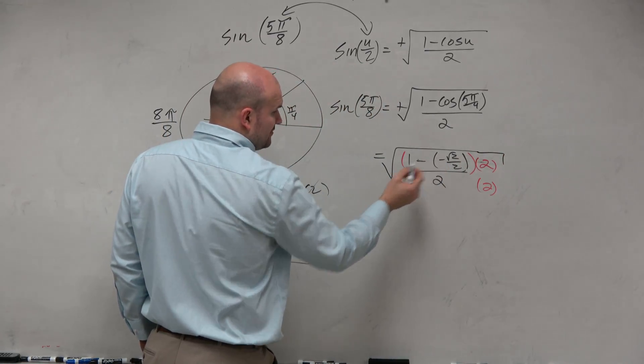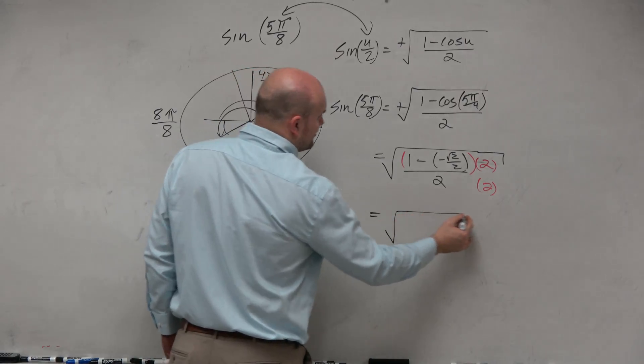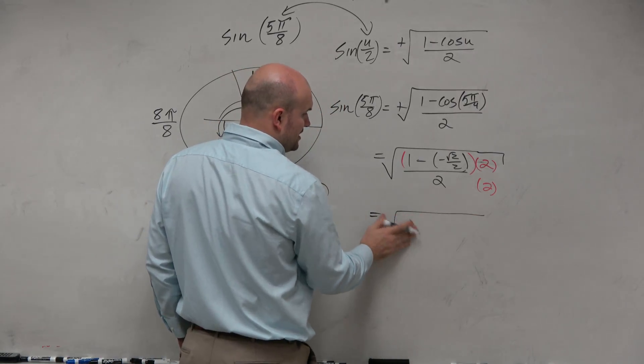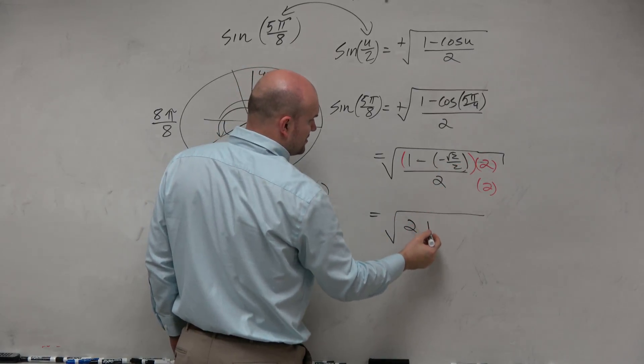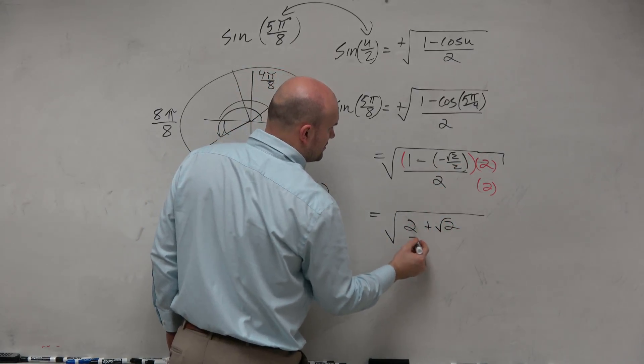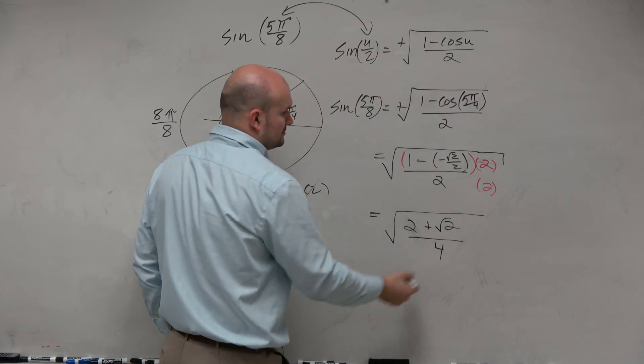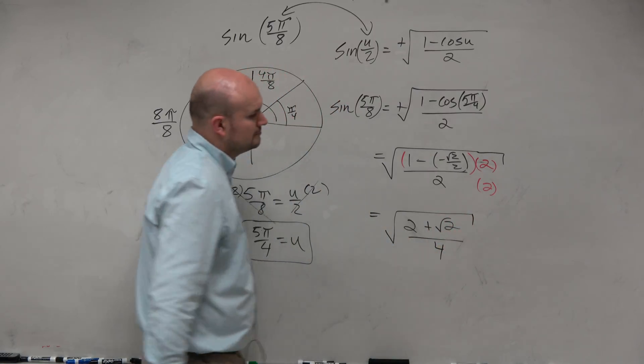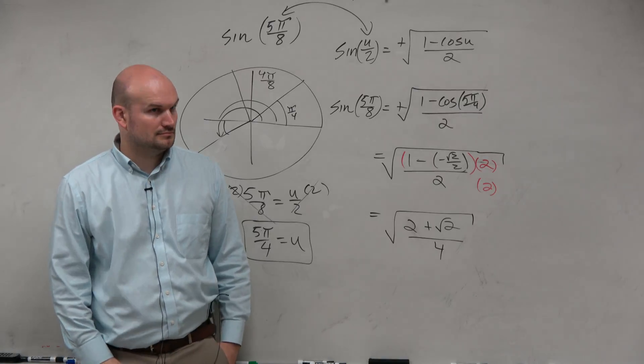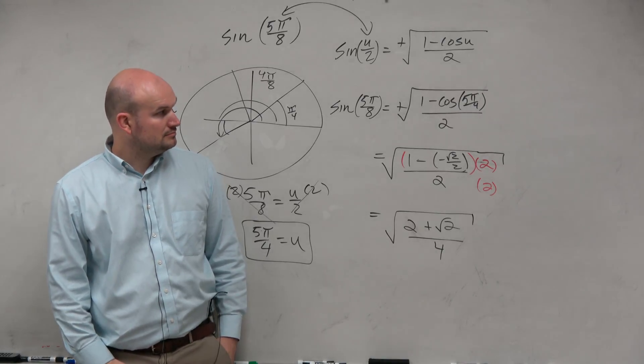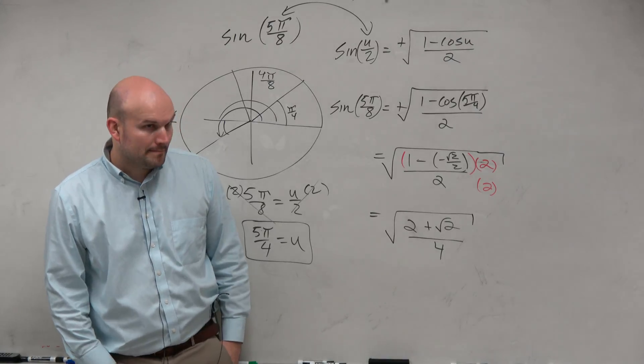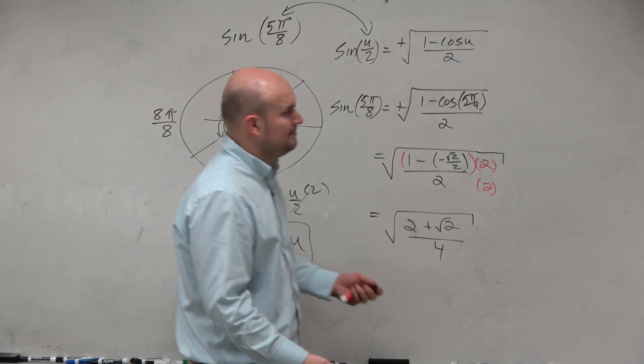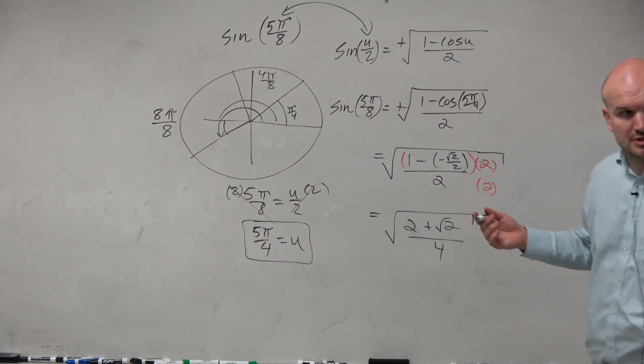So, negative and negative makes a positive. So now I have the positive square root of 1, sorry, 1 times 2 is 2. That now becomes a positive. The 2's divide out, so I'm left with plus square root of 2 over 4.